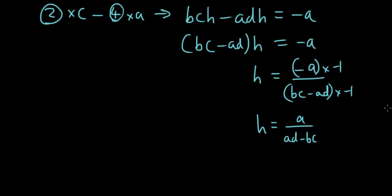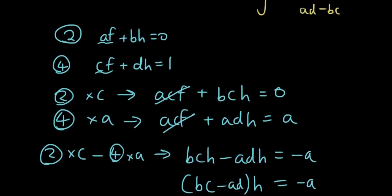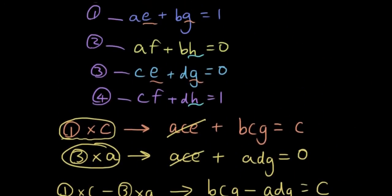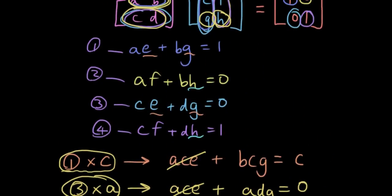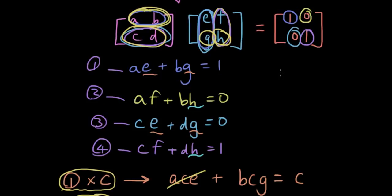Continuing this fashion, you will end up with the four formulas for each of the unknown variables. I've already found G and H. Basically you're going to find that E equals D over AD minus BC, and then F equals negative B over AD minus BC if you solve the other two simultaneous equations.